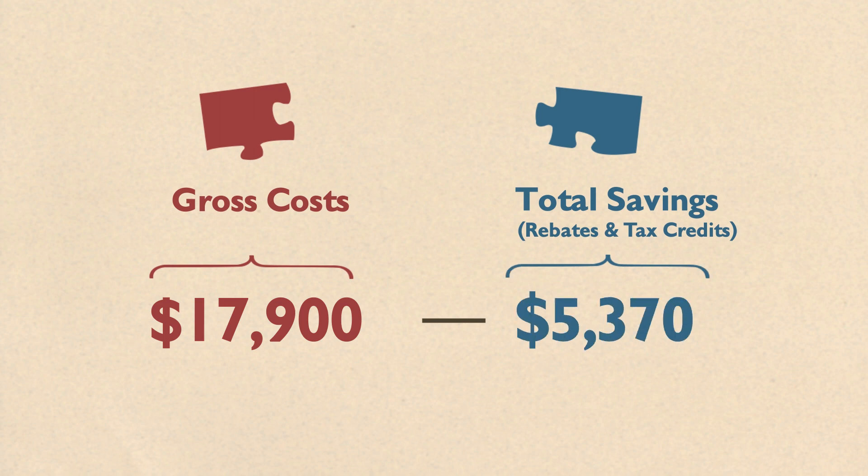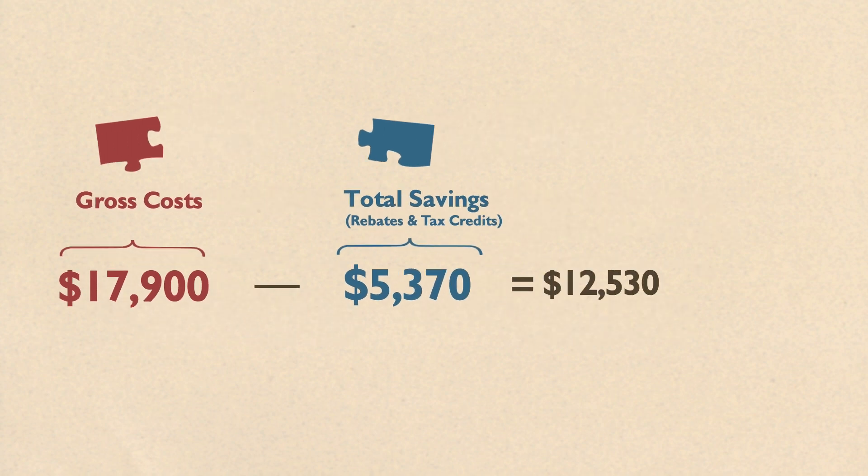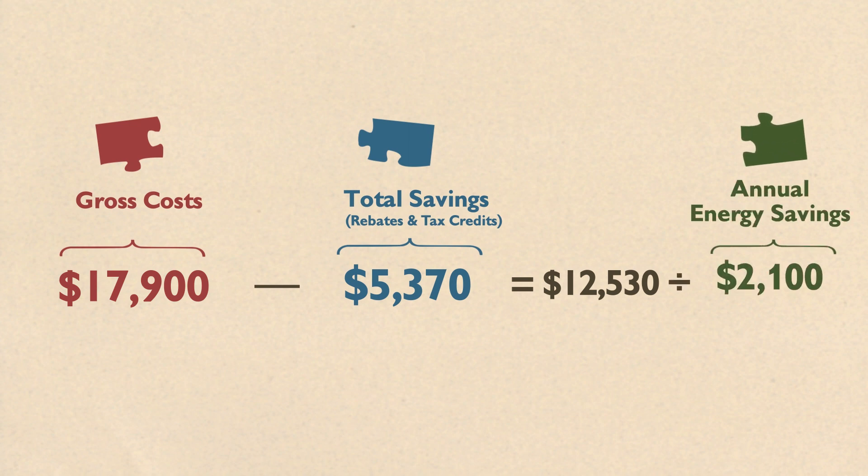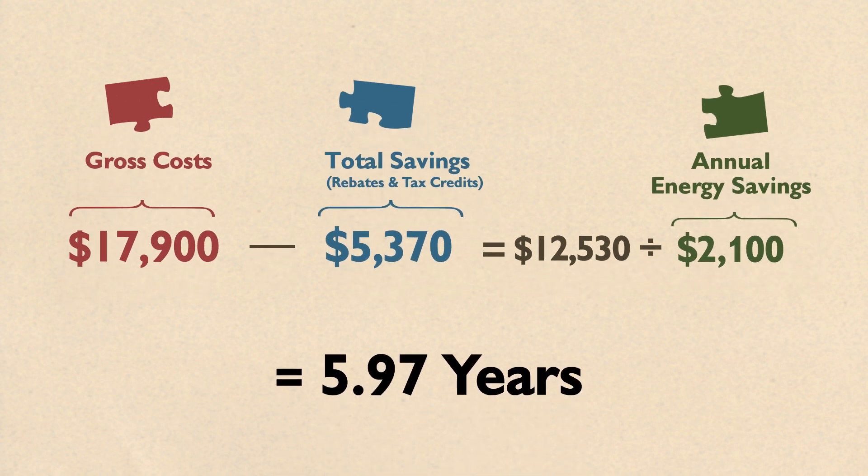First, subtract your total tax credits and incentives from your total gross cost. Then, take your new annual energy savings and divide it by your net cost. The result is the number of years before your solar system is paid off and starts paying you.